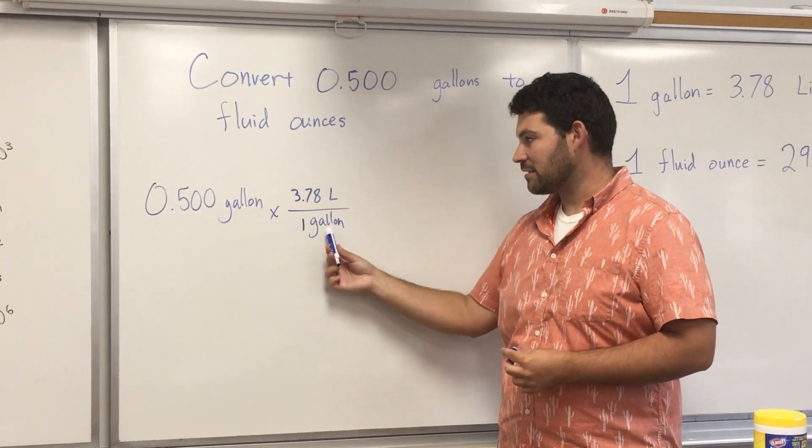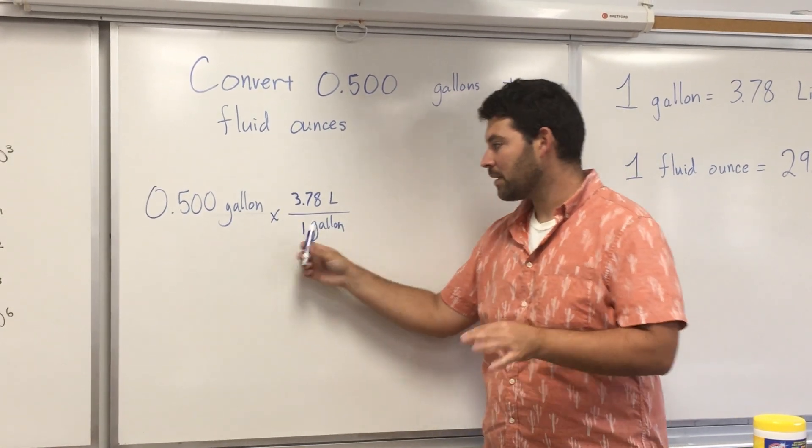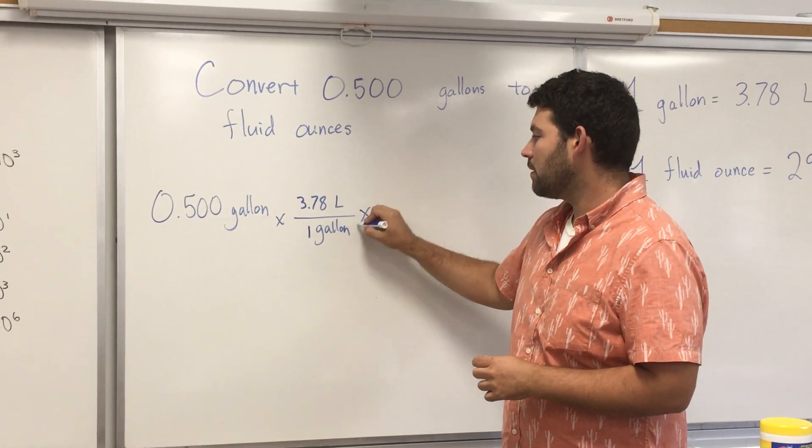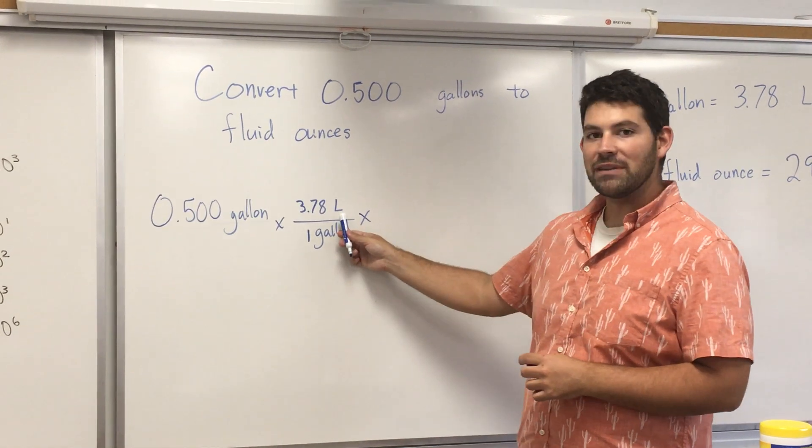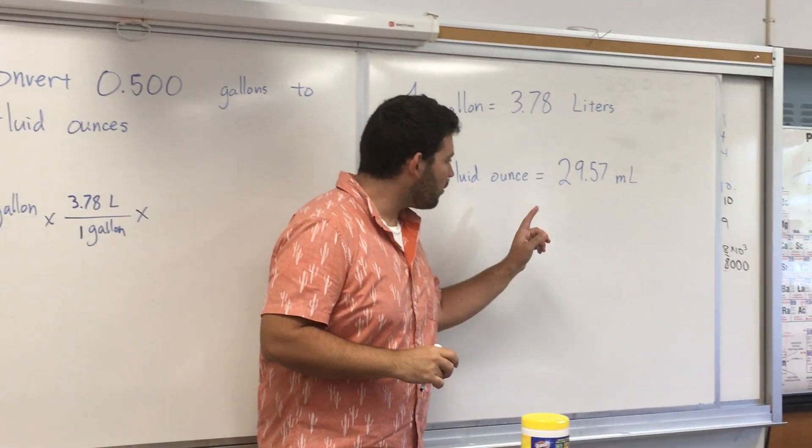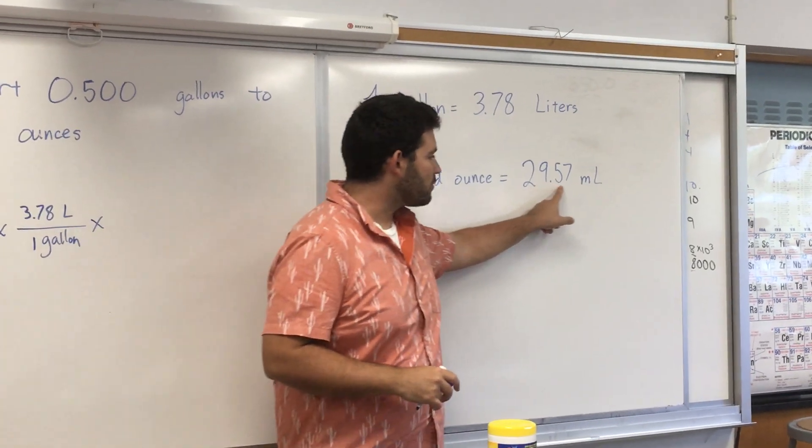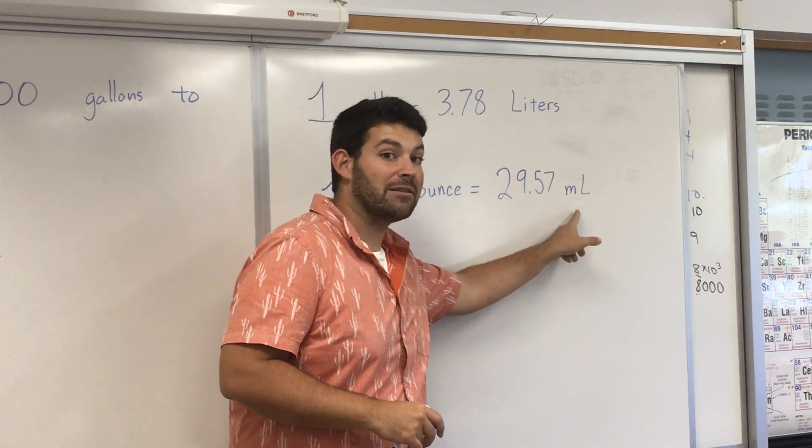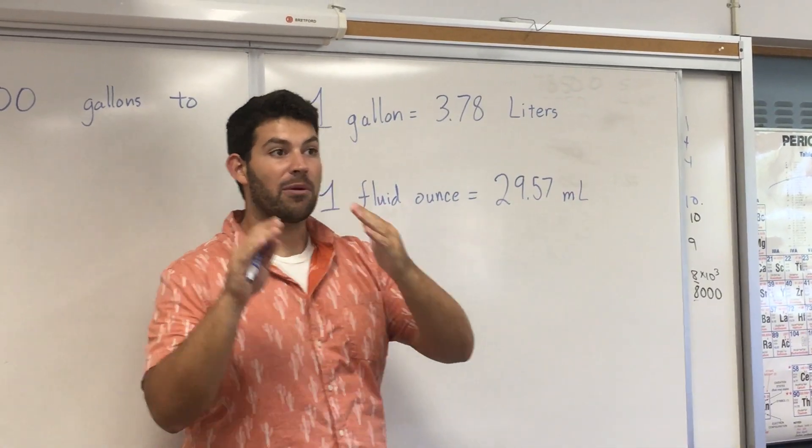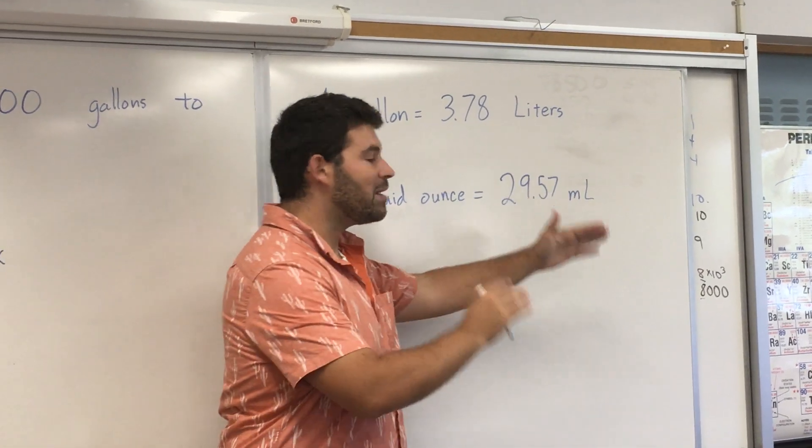Gallons will cancel out. I'll multiply across. I'll divide by the bottom. In my next step, gallons will go away. I want to get rid of liters. I know that one fluid ounce equals 29.57 milliliters. So I want to go from a regular liter to a milliliter.